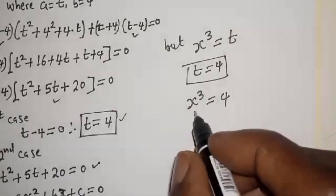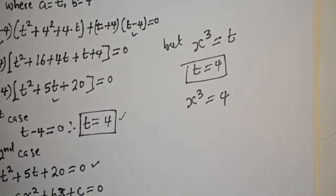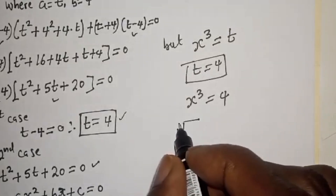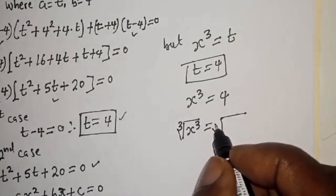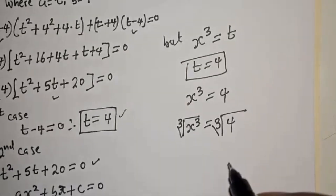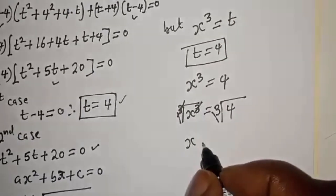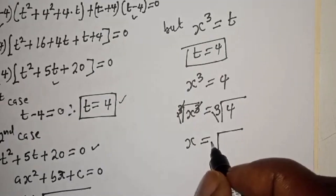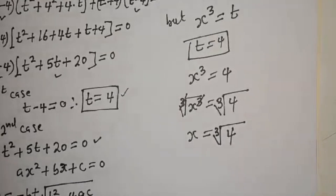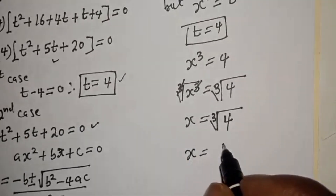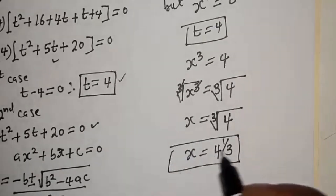So let's take the cube root of both sides. Cube root of s raised to the power 3 equals cube root of 4. This cancels, giving s equals cube root of 4. Then s equals 4 to the power 1 over 3. This is the final answer.